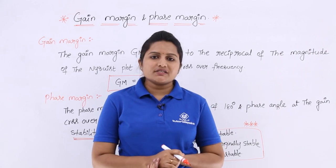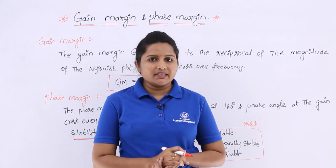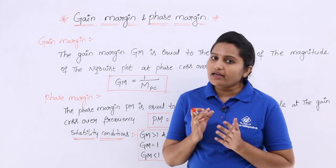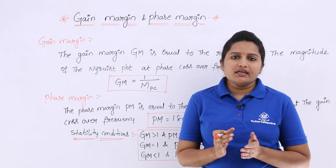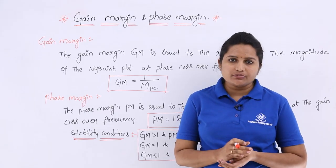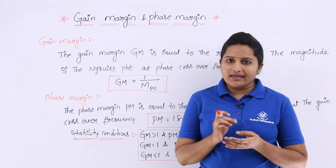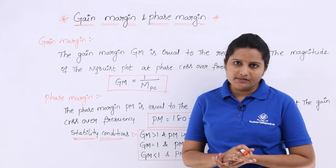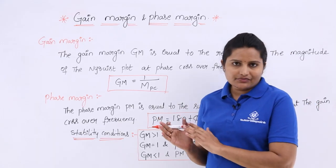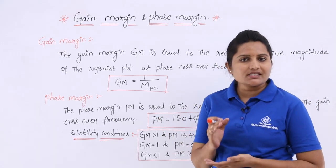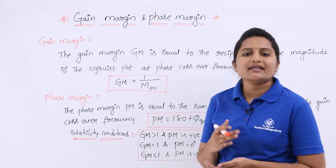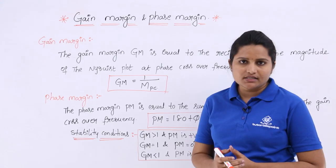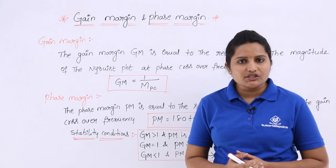In this video we are going to discuss Nyquist stability analysis by using gain margin and phase margin. As already discussed in the last class, we can analyze the stability of the Nyquist plot by using gain crossover frequency and phase crossover frequency, or gain margin and phase margin. In the last class we already covered gain crossover and phase crossover frequencies. Now we will discuss gain margin and phase margin and how we can ensure the stability of the system using them.